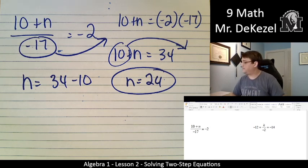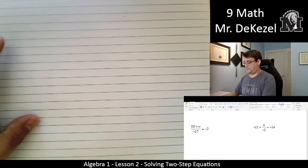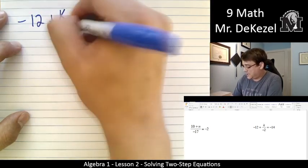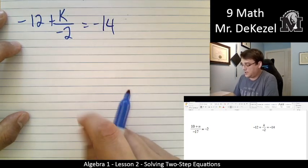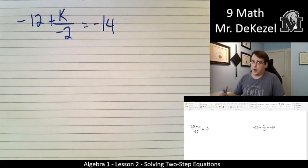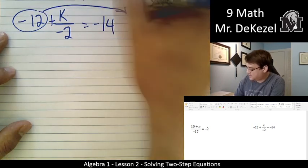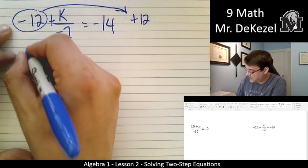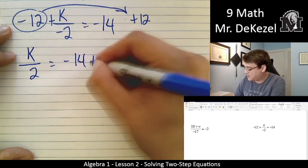Easier than you thought. And one more. Minus 12 plus k divided by minus 2 equals minus 14. So in this one, we don't have a denominator across the entire problem. We just have it in one part. So we're going to go ahead and move this across the equal sign. So it's negative on one side, it becomes positive on the other side. That's k divided by 2 is equal to minus 14 plus 12.